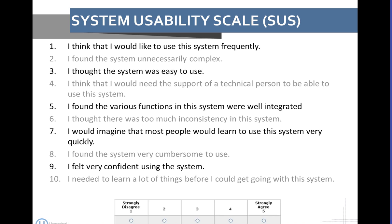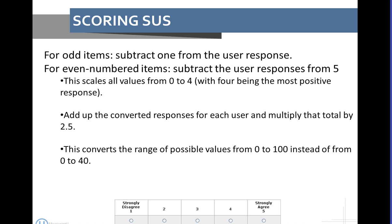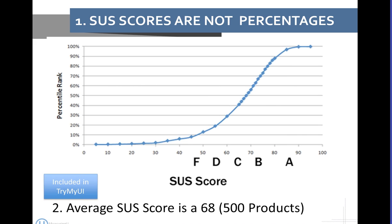Discrimination is a good thing when you're talking about psychometrics — you want to be able to discriminate between good software and bad software. These 10 items alternate from positively toned items, like 'I think I would like to use this system frequently,' to negatively toned items, like 'I found this system unnecessarily complex.' Participants respond on a five-point Likert scale from strongly disagree to strongly agree. The scoring requires reorienting the negative items so they're positive, and scaling everything from 0 to 100 instead of 0 to 40.